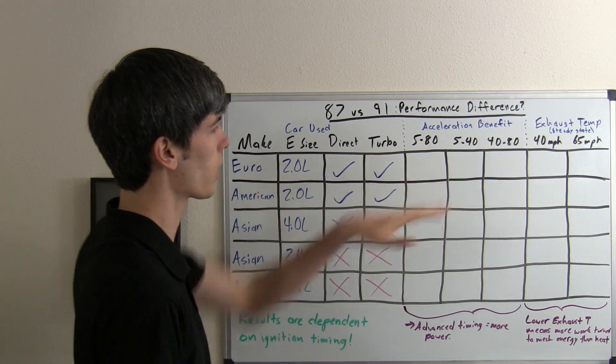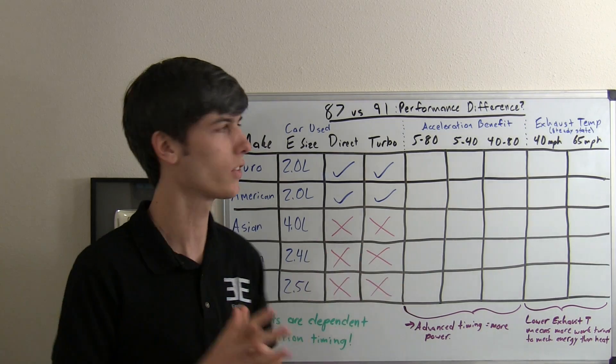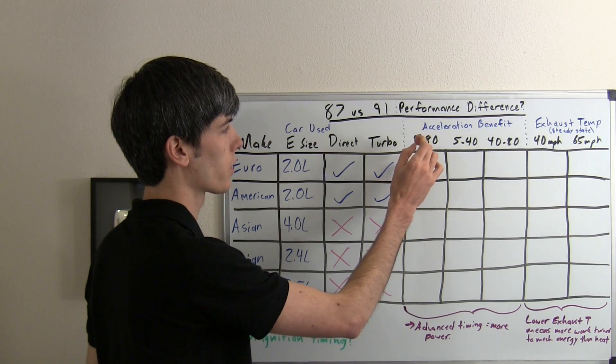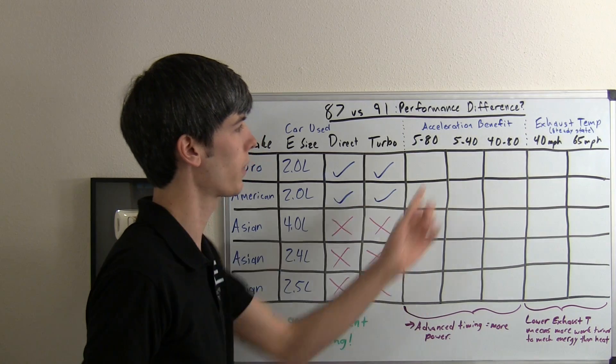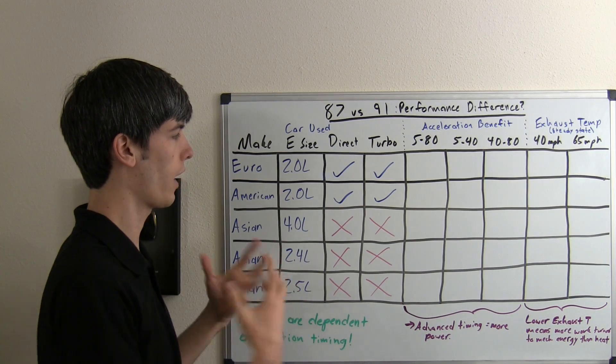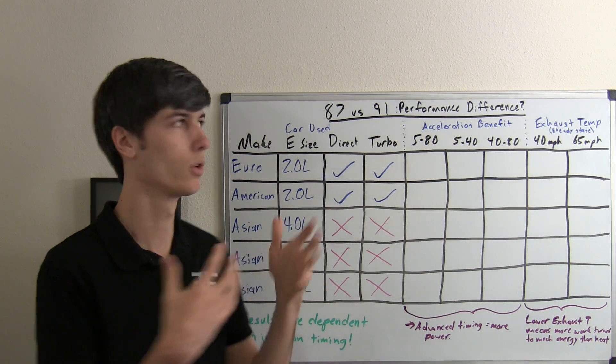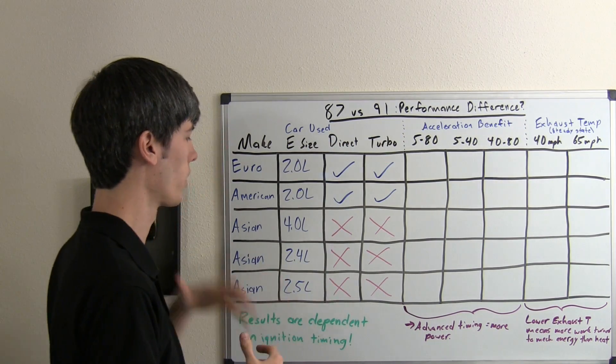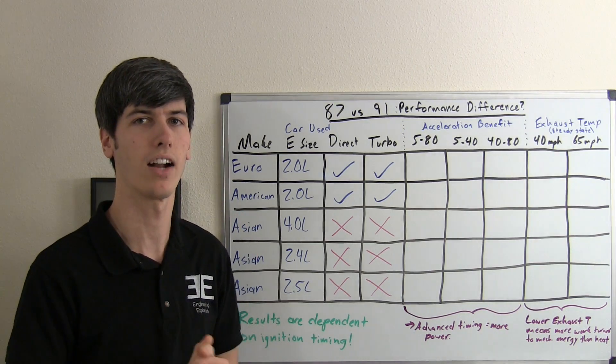Let's first talk about acceleration benefit. What they looked at was the time it took from 5 to 80 miles per hour, 5 to 40, and 40 to 80, and then looked to see the percentage of how much faster the 91 octane was versus the 87 octane.